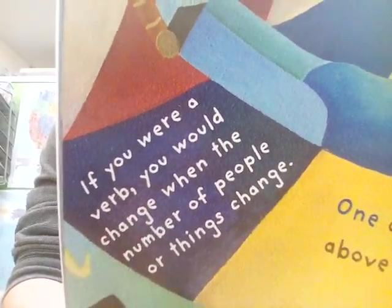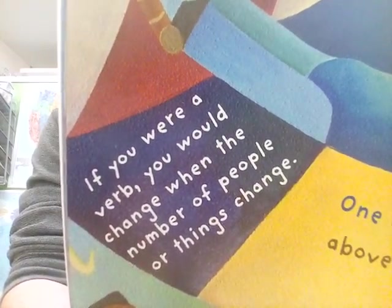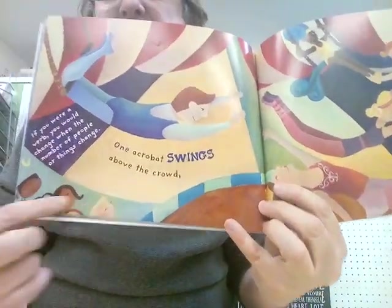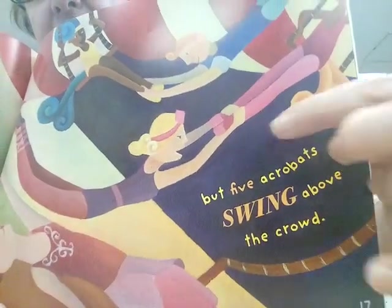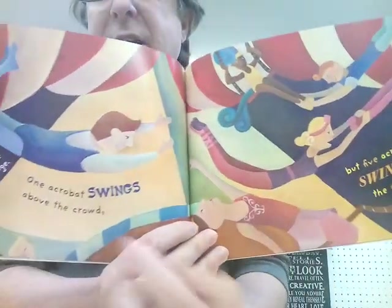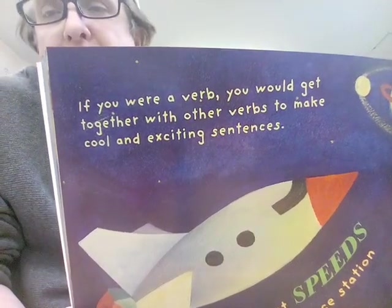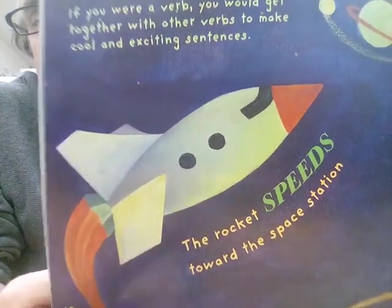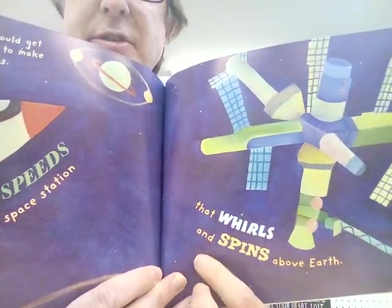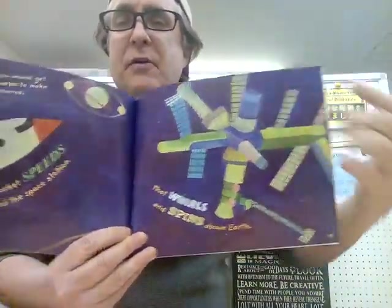If you were a verb, you would change when the number of people or things changes. For example: one acrobat swings above the crowd. But five acrobats swing above the crowd. One swings, five swing — you can see it changes in English. If you have more than one thing, the S goes away. If you were a verb, you would get together with other verbs to make cool and exciting sentences. For example: the rocket speeds towards the spaceship that whirls and spins above the earth.